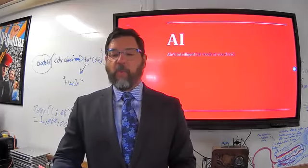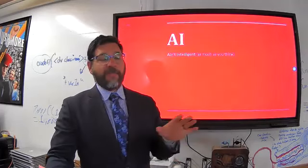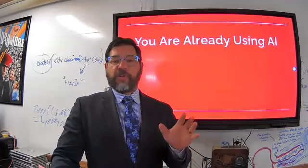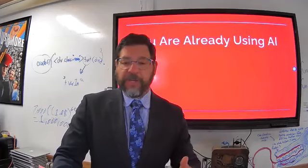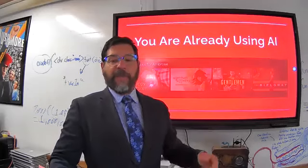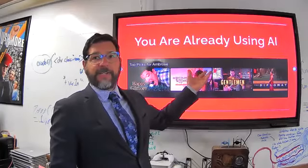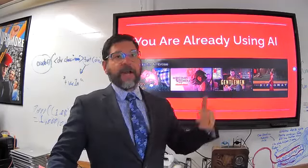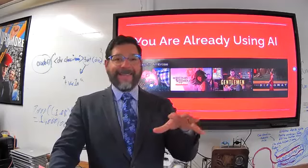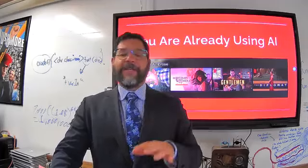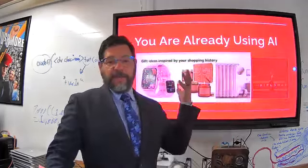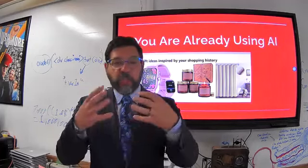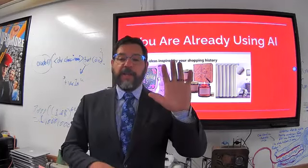It's important to understand that artificial intelligence has been around for a long time, and most of you have probably encountered and used AI quite a bit over the last decade. Everything from your Netflix recommended list, the algorithm that chooses things for you to watch on Netflix, Hulu, YouTube, Instagram, or TikTok — there is an artificial intelligence underlying that trying to figure out what you want to see. The purchases you make on Amazon also use an algorithm to find stuff you want to buy, because that's their commercial interest.